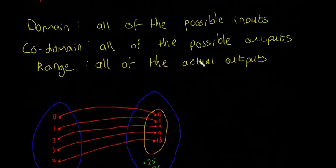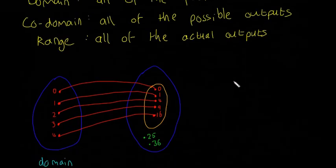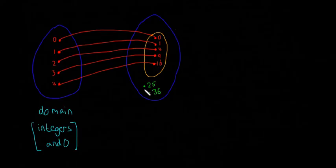And then this one here, the co-domain are all of the possible outputs. So this is the big blue one here. So I'm going to say the co-domain, all of the possible outputs. So the possible outputs are the numbers that can come out of that. So for example, all of these, 0, 1, 4, 9, 16, 25, 36, they are all in the co-domain.